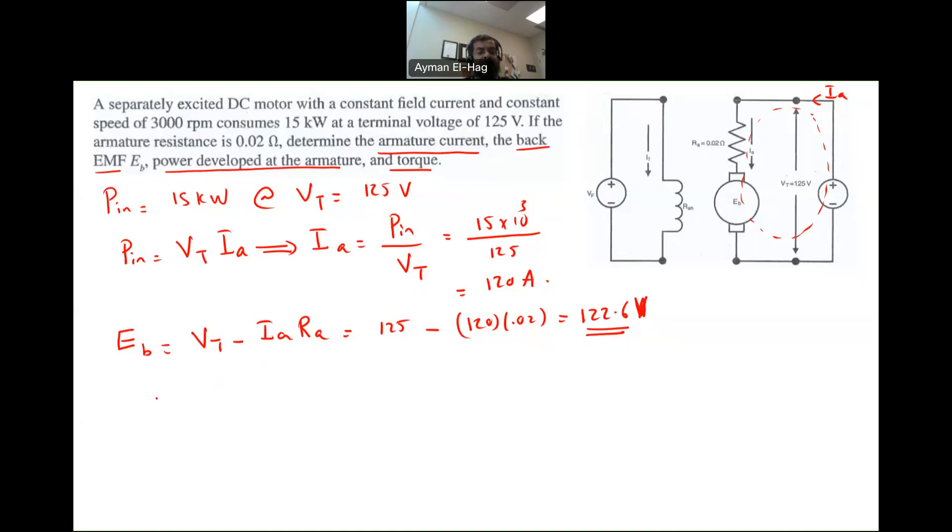Then we want to find the power developed, P developed. Now, P developed is basically PN minus P electrical losses. But since we don't know IF or RF, then we cannot find the electrical losses. But P developed also equal to the back EMF times IA.